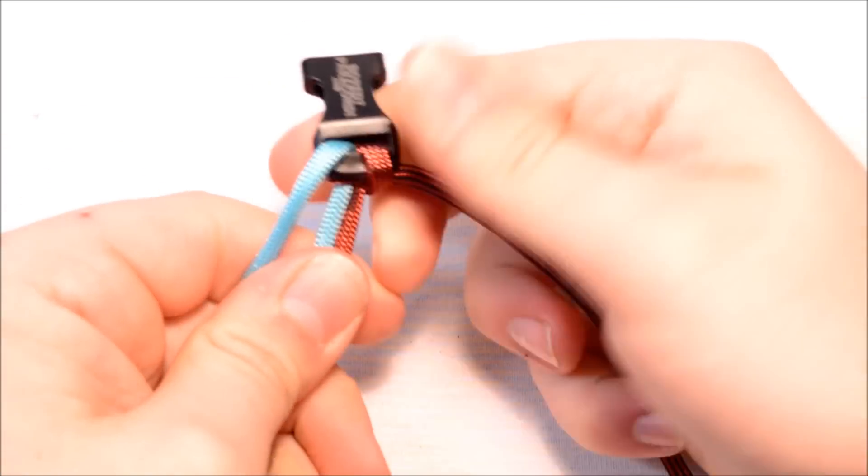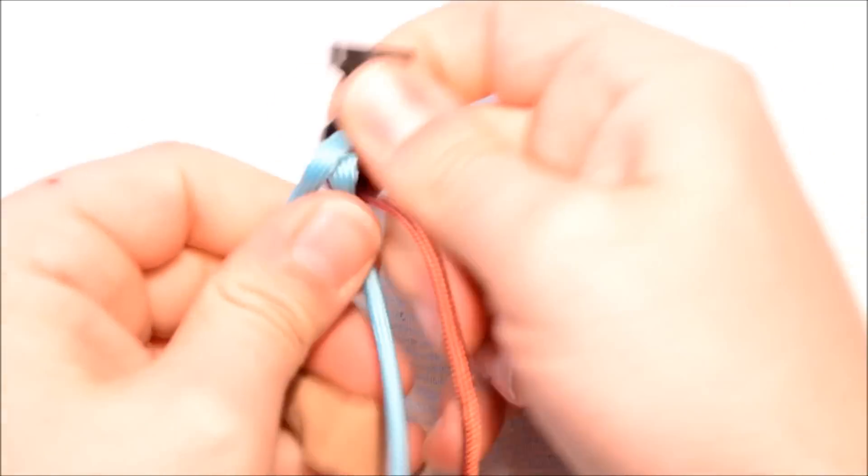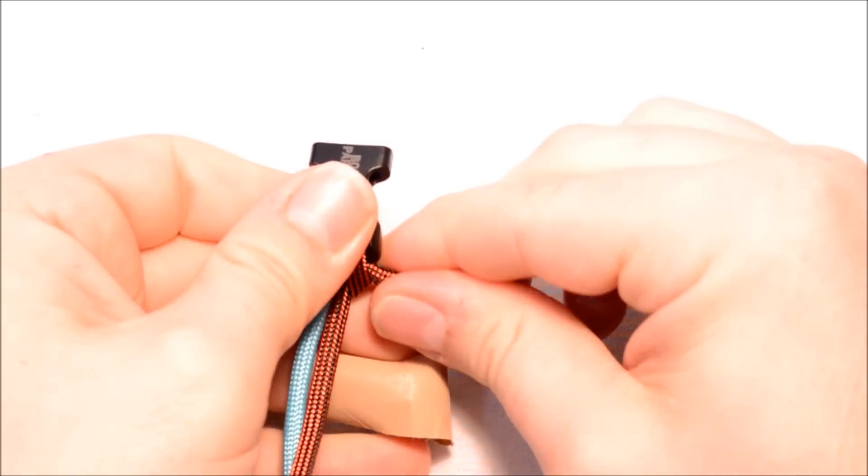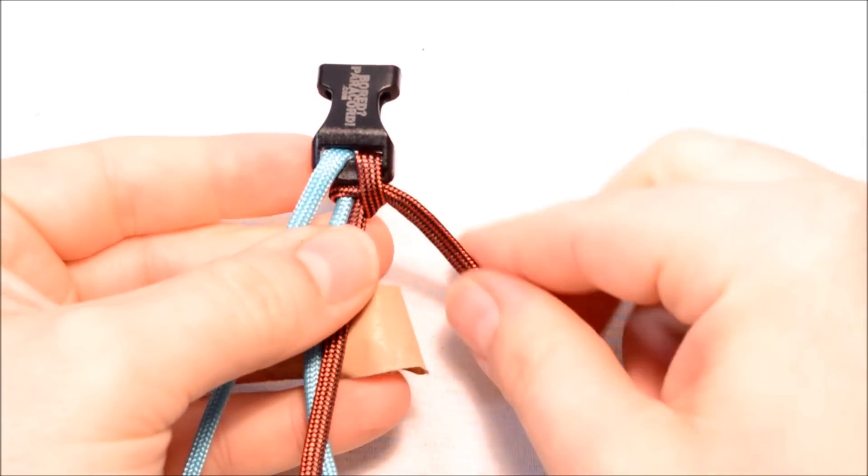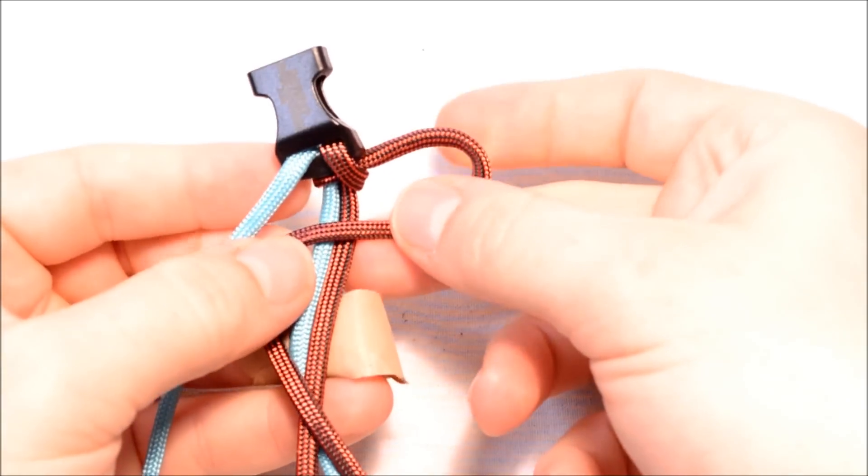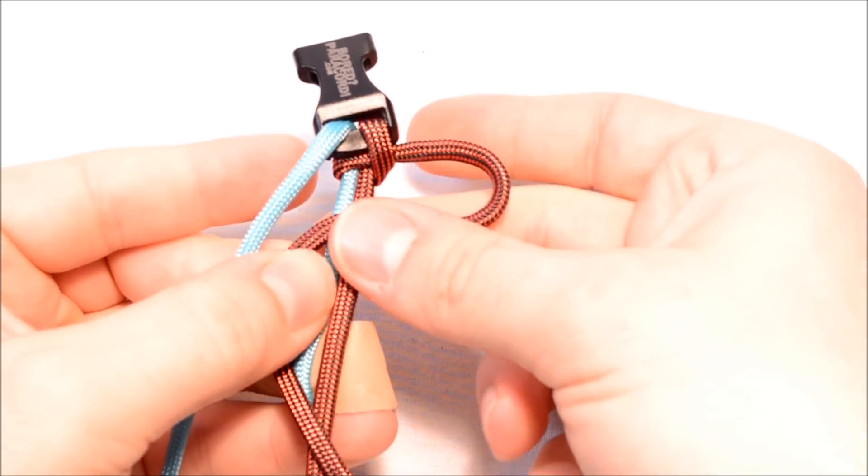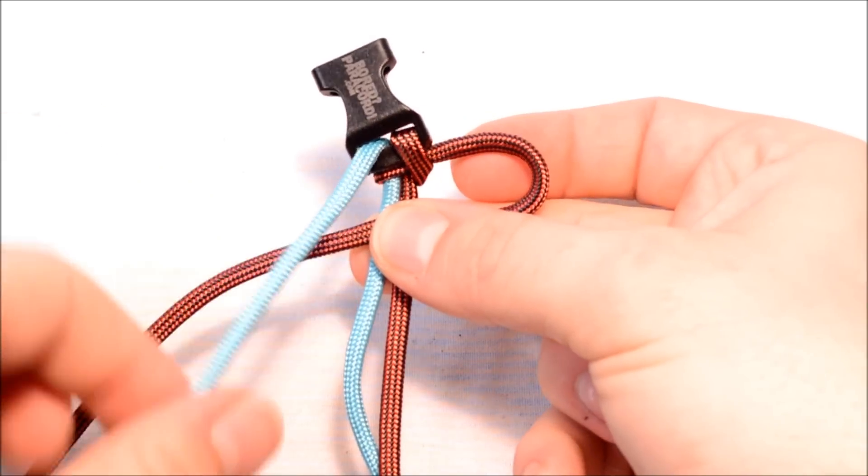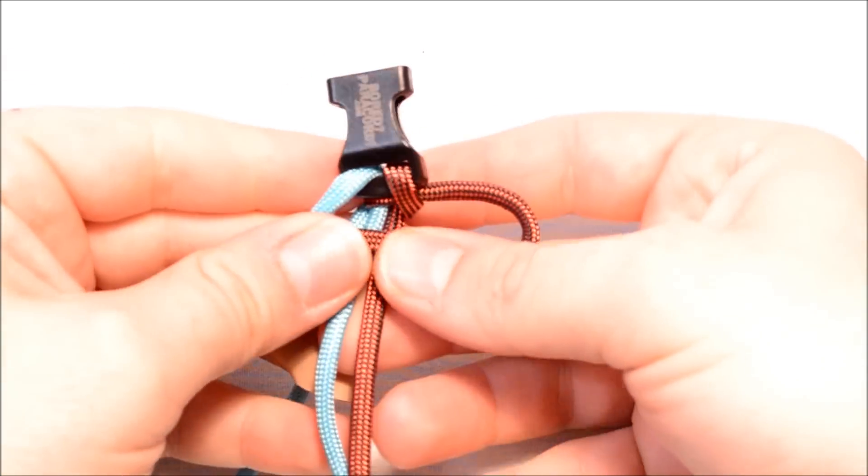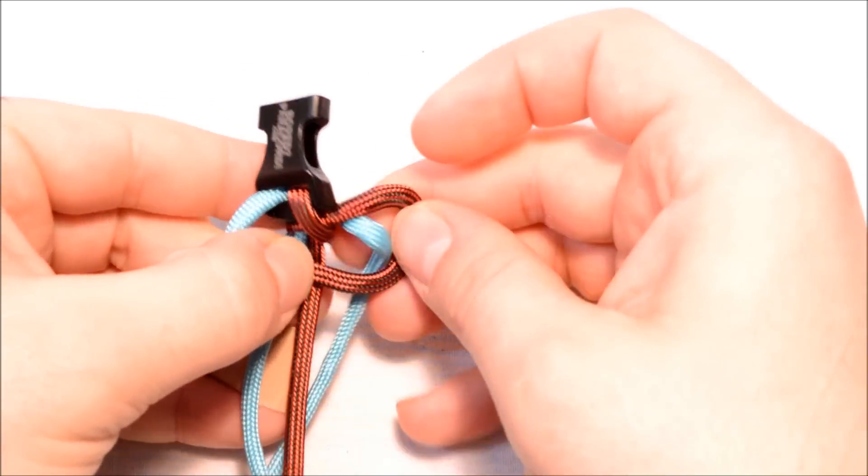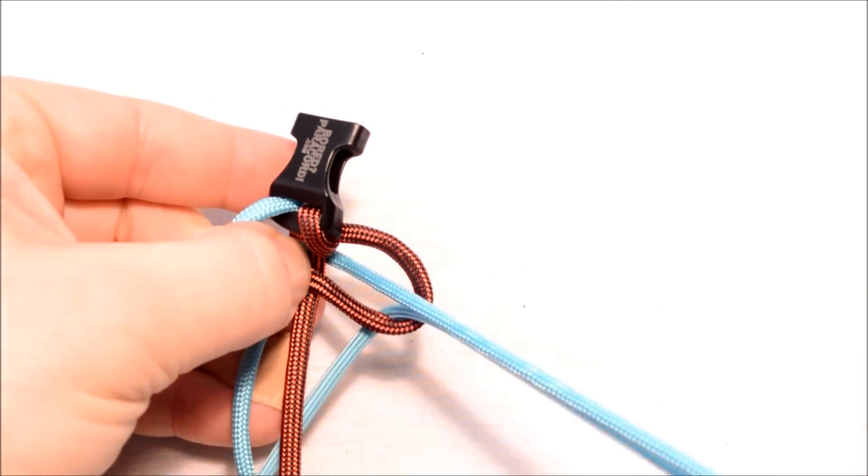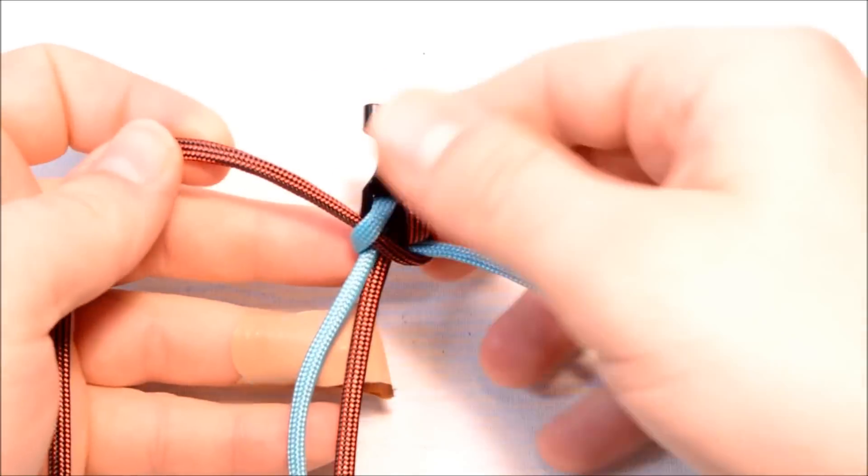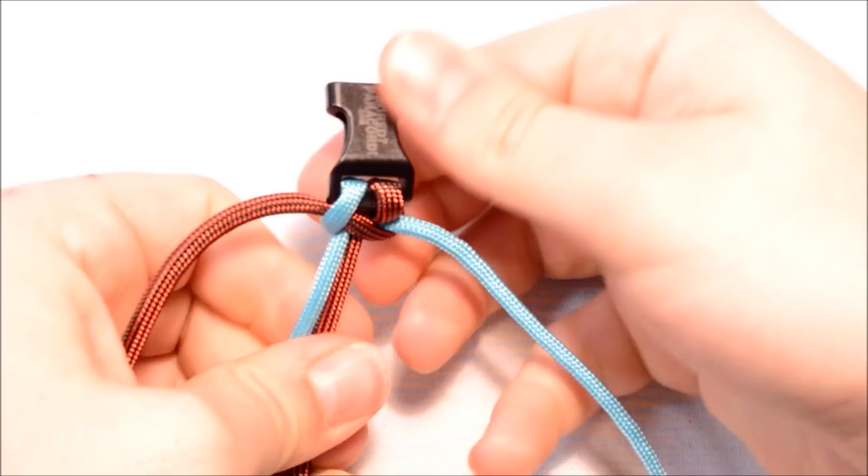Once you have that, then you're going to do a Solomon. And you want to make sure that this is in front of the buckle, not below. Just go over top of your two center strands. Bring this up to the left. Take your left cord, go over that right cord, and then go up through that loop. There we go. Pull this tight.